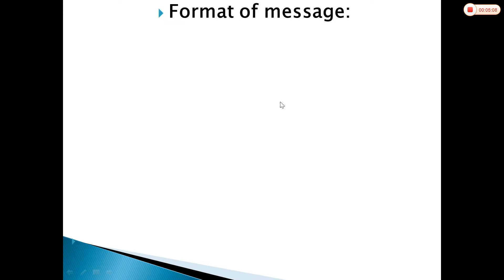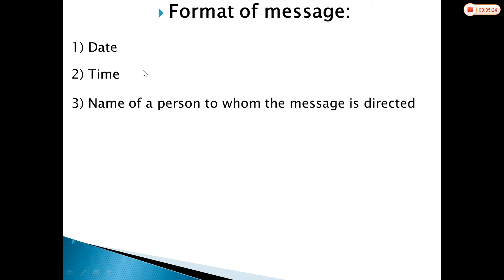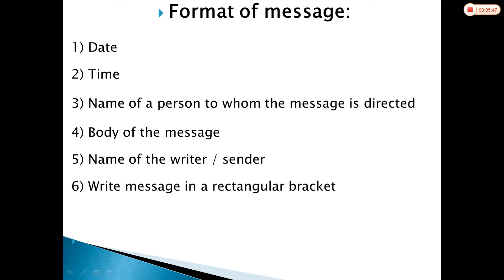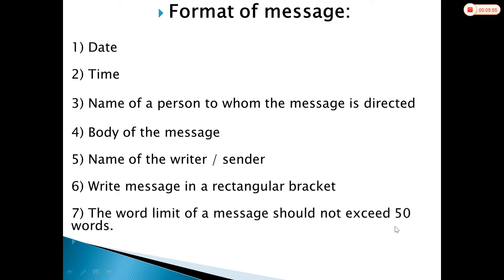Now the format: how this should be written. First, the date on the left side. Then the time. Then the name of the person to whom the message is directed. Then the body of the message with the main important details. At the end, the name of the writer or sender. Write the message inside a rectangular box drawn with pencil or pen. The word limit of a message should not exceed 50 words — be precise and perfect.